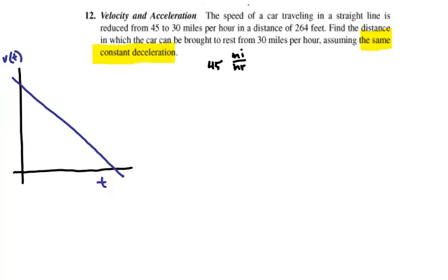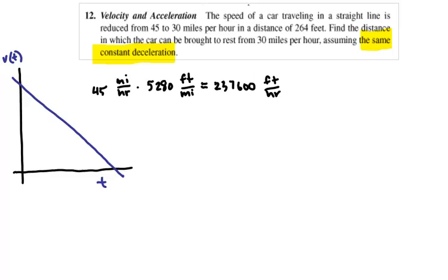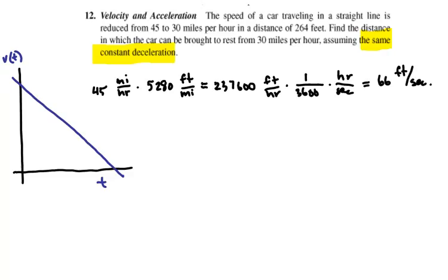So 45 miles per hour times 5280 feet per mile, and that gives me 237,600 feet per hour. But we're going to convert that to seconds. I'll just move that over here so it's easier to work with. And we multiply that times 1 over 3,600 hours per second, and that gives us 66 feet per second. So the 45 miles per hour translates into 66 feet per second.